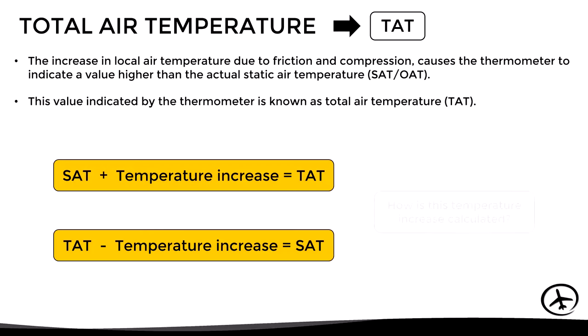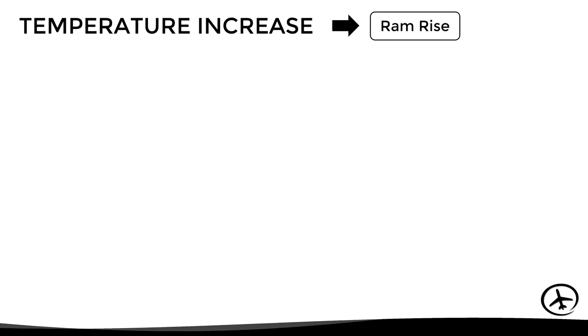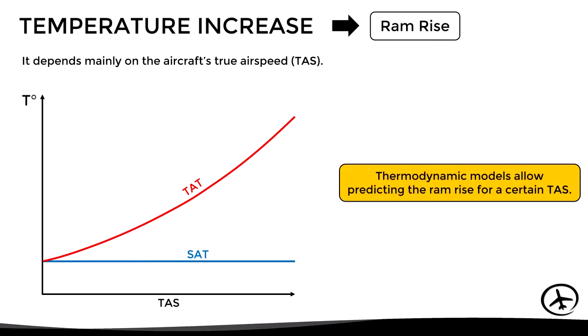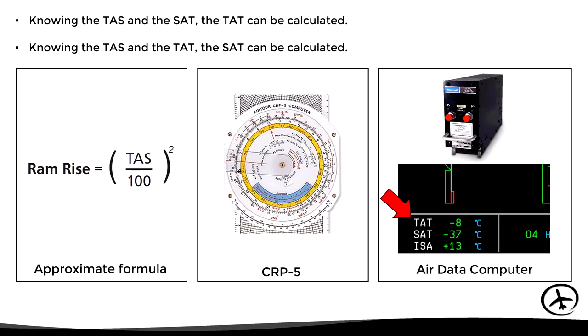The question is: how do we calculate this temperature increase due to friction and compression? This temperature increase, also known as ram rise, is directly related to the aircraft's true airspeed, which results in a graph where the static air temperature remains constant with airspeed while the total air temperature increases due to friction and compression. Thermodynamic models allow predicting the ram rise for a given true airspeed. Knowing the true airspeed and the static air temperature, the total air temperature can be calculated by means of an approximate formula, a flight computer that incorporates that functionality, or automatically in real time with an air data computer.